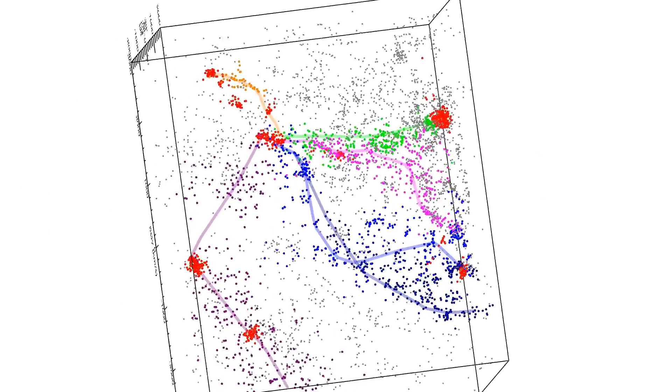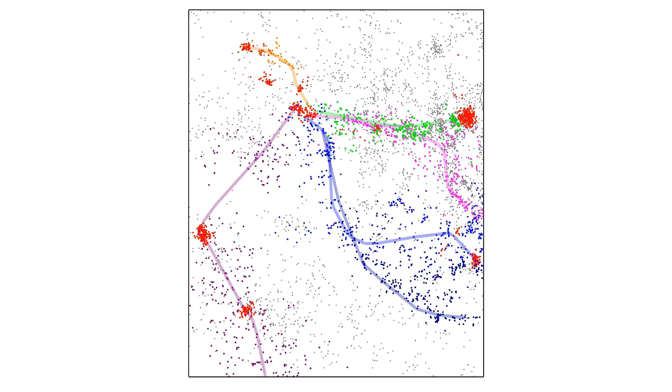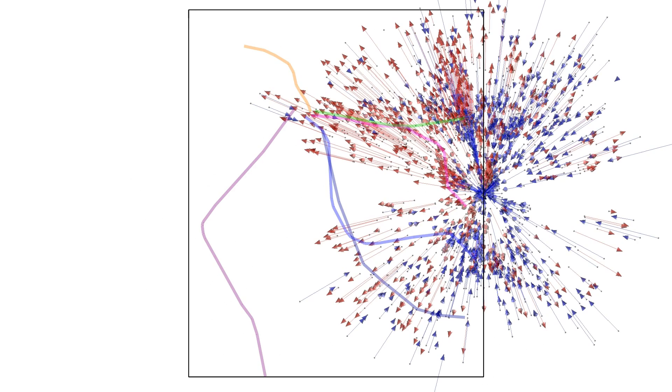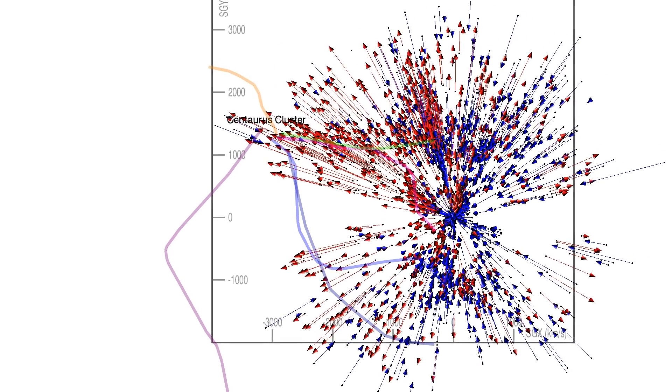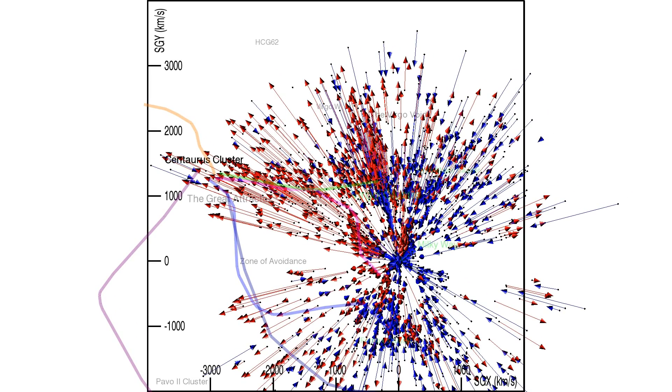The presentation now transitions to representations of the velocity field. Only a fraction of the galaxies in the Redshift Catalog have accurately measured distances. In the present analysis, our distance measurements are limited to the volume within 3000 km per second. We begin with a polar view of a 3000 km per second slab in thickness. An arrow is attached to each galaxy with a measured distance. The new reference frame is Hubble expansion with respect to the cosmic microwave background.